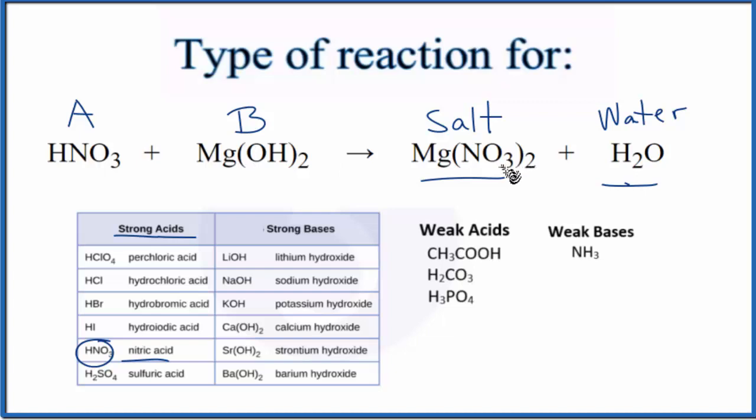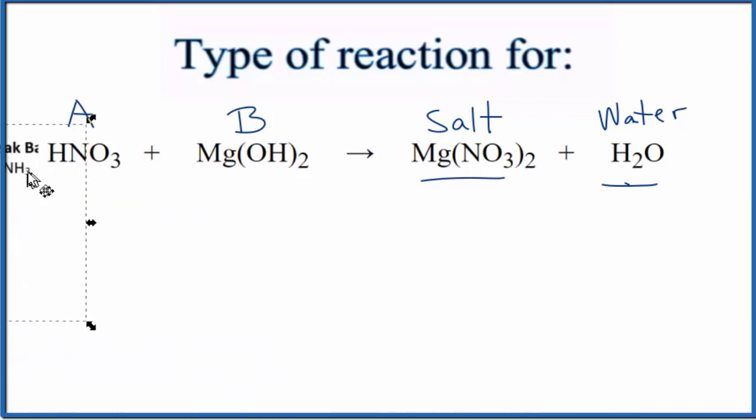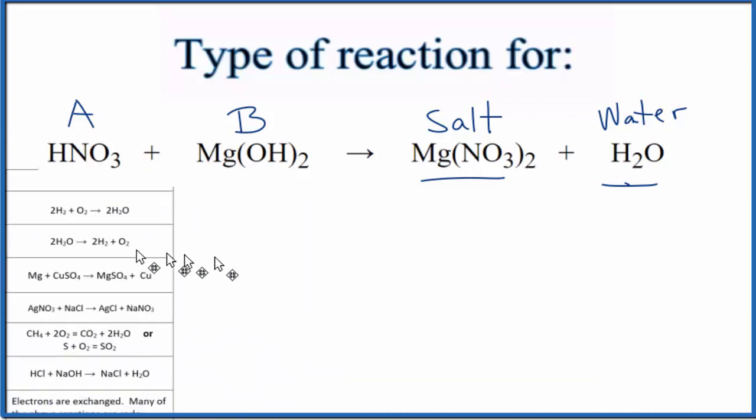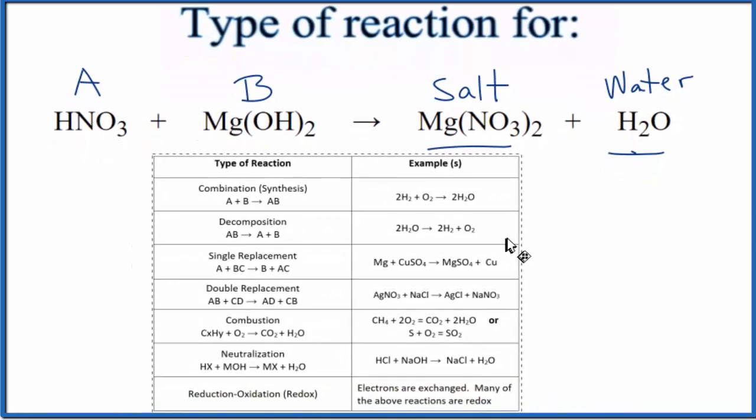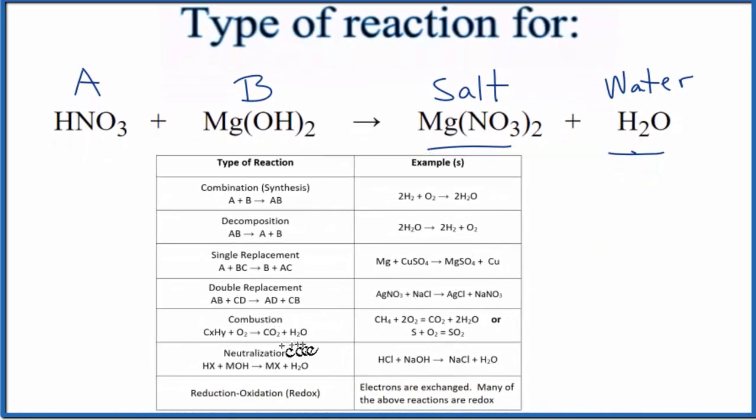So we have our neutralization reaction here. Let's also take a look at a table of common chemical reactions. So we saw that we have neutralization here. We have our HX. Here's our H. Then we have our metal bonded to the hydroxide. Our magnesium, Mg, bonded to the OH. Then we have a salt and water. Neutralization.